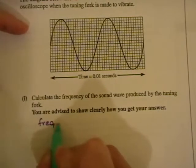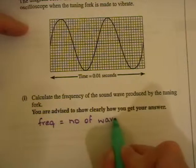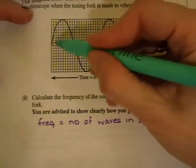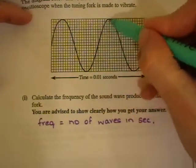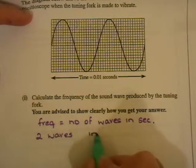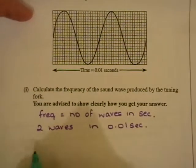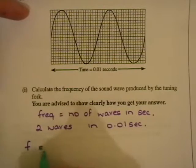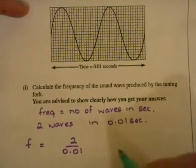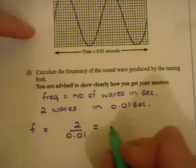And so we can see from the diagram that you've got one, two complete waves there. So we've got two waves, and that's in 0.01 seconds. So if we want to get our frequency, it's the number of waves in one second. We just divide two by 0.01, and that will tell us how many waves are in one second. And whenever you do that, you get an answer of 200.